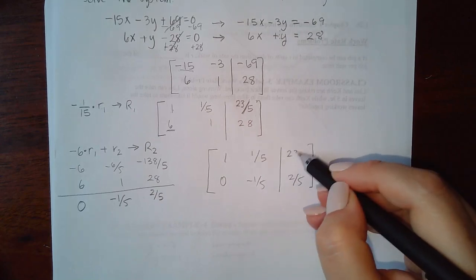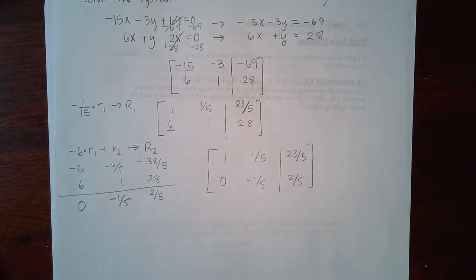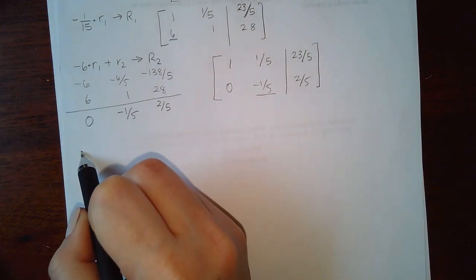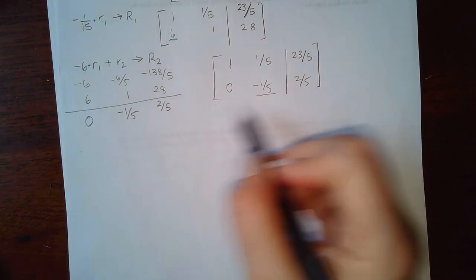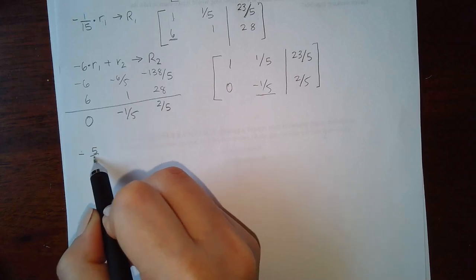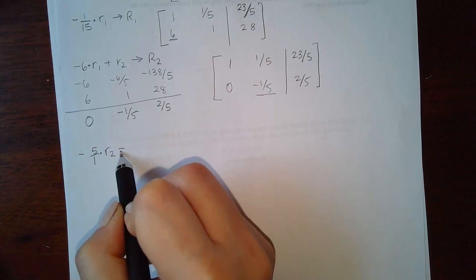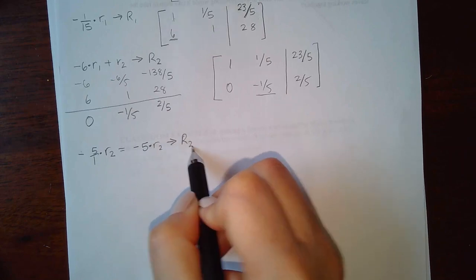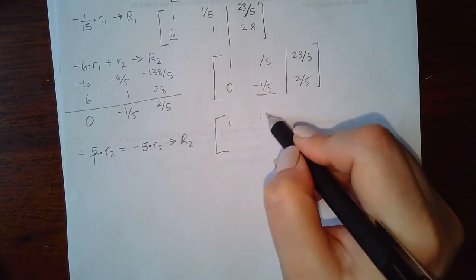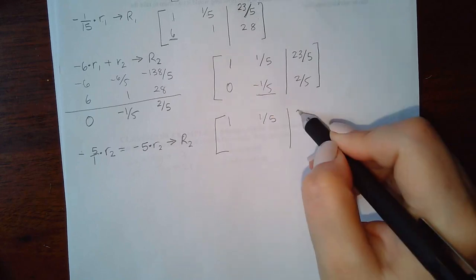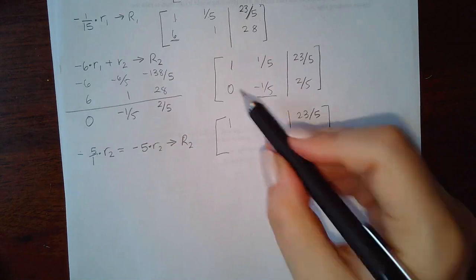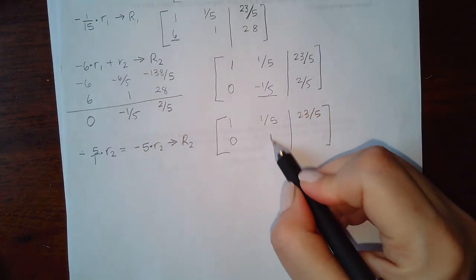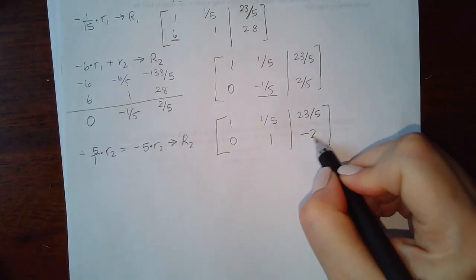Row 1 is copied over unchanged. Now change the -1/5 pivot into a 1 using its reciprocal. The reciprocal of -1/5 is -5, so multiply row 2 by -5: 0 × (-5) = 0; (-1/5) × (-5) = 1; (2/5) × (-5) = -2. New row 2 is [0, 1 | -2].